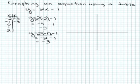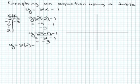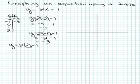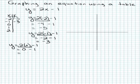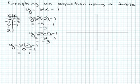Then I'm going to put 0 in for x. Using order of operations, multiply before subtract: 2 times 0 is 0, and 0 minus 1 is negative 1. So when x is 0, y is negative 1.